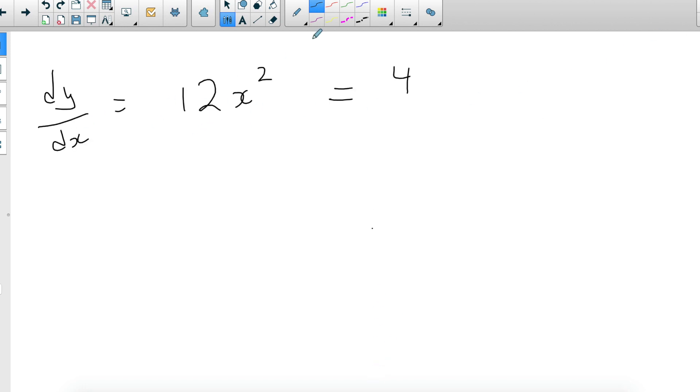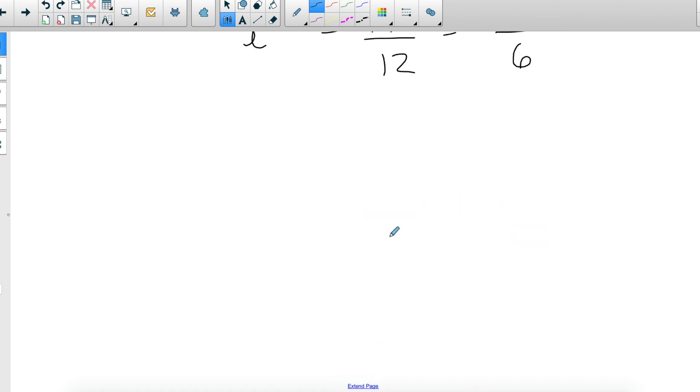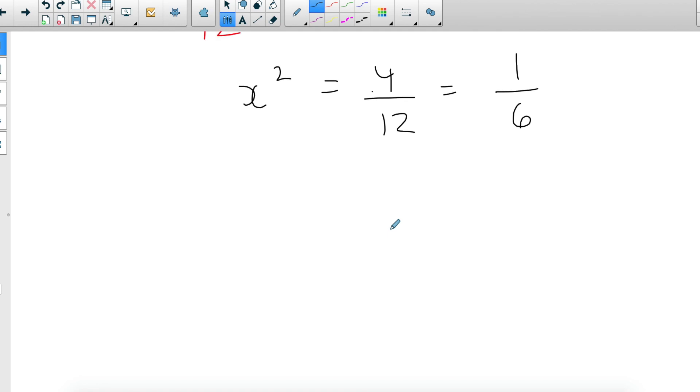And then I'm going to divide by 12 on both sides, so I'm going to end up with x² equals 4 over 12, and I can simplify this to 1 over 3. And then I have x is equal to the square root of 1 over 3, which is the same as saying 1 over the square root of 3.